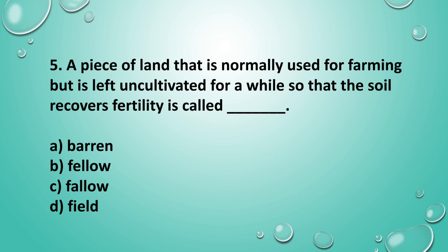Question 5: A piece of land that is normally used for farming but is left uncultivated for a while so that the soil recovers fertility is called ___? The answer is option C — Fallow, spelled F-A-L-L-O-W.